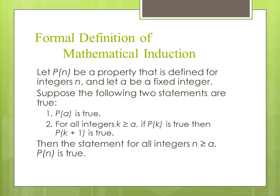Here's the formal definition. Read it carefully. Let p of n be a property that is defined for integers n and let a be a fixed integer. Suppose the following two statements are true: p of a is true, and for all integers k greater than or equal to a, if p of k is true, then p of k plus one is true. Then the statement is true for all integers greater than or equal to a.